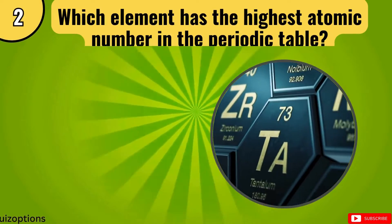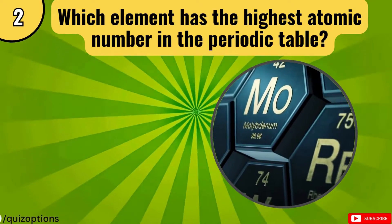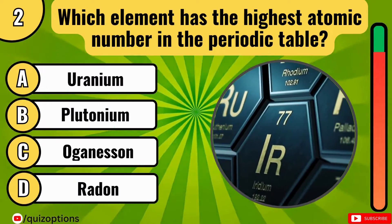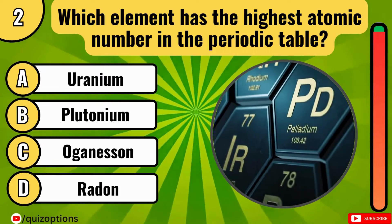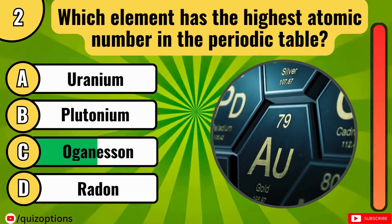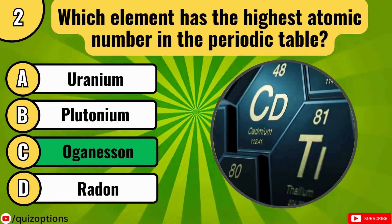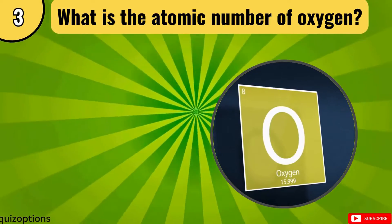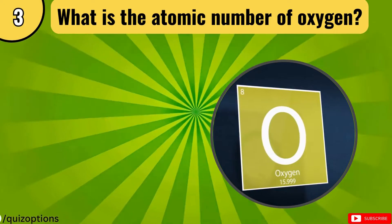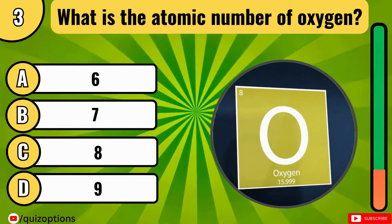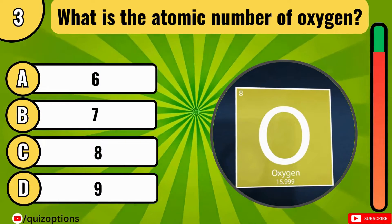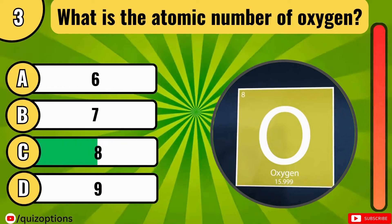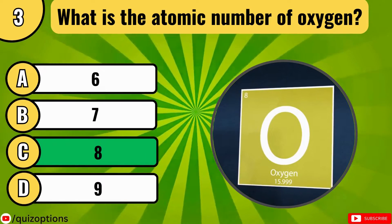Which element has the highest atomic number in the periodic table? Option C is the right one. What is the atomic number of oxygen? The atomic number of oxygen is 8.